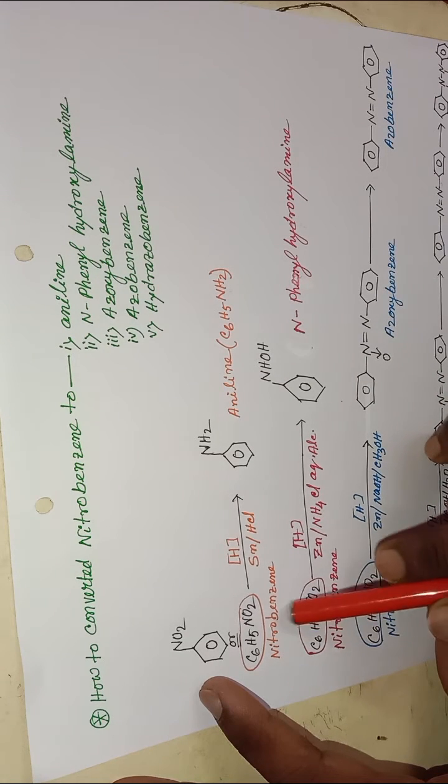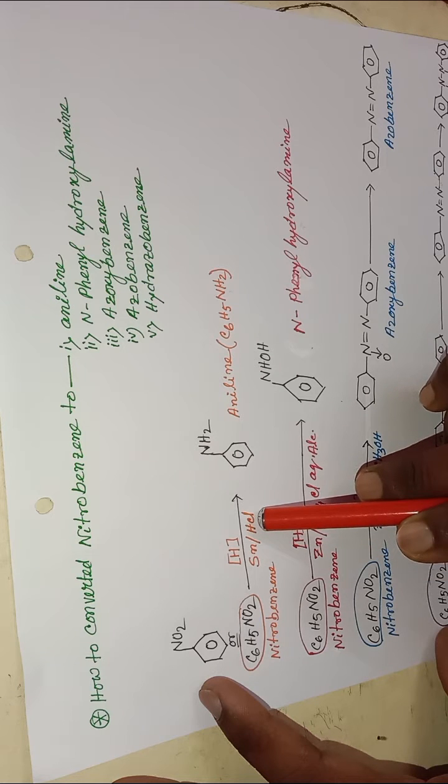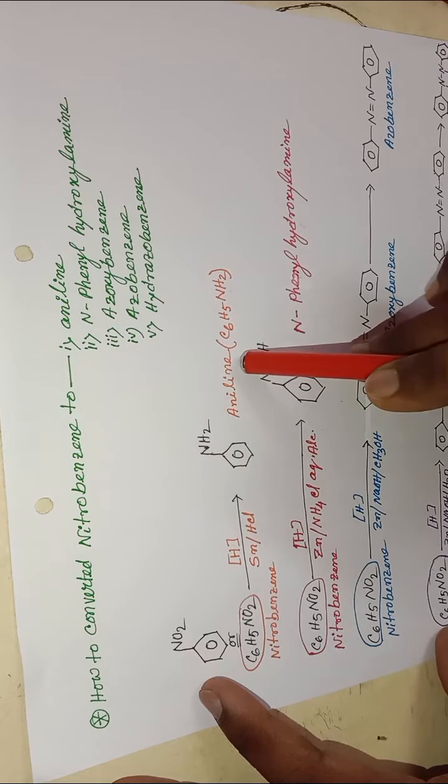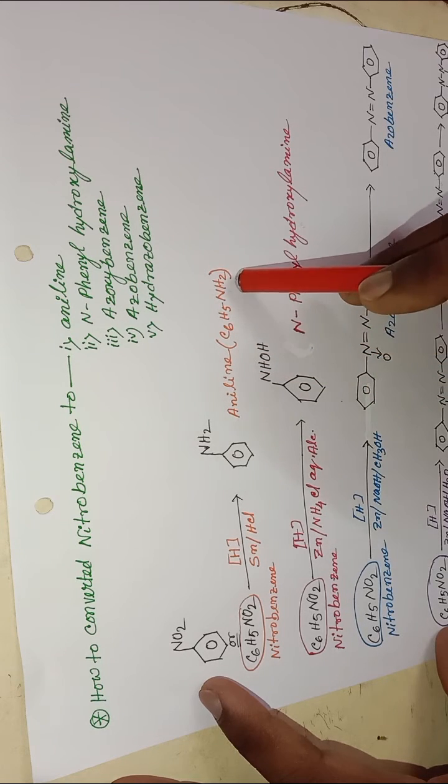At first, nitrobenzene reacts with tin with HCl, i.e., reduction reaction, to form aniline C6H5NH2.